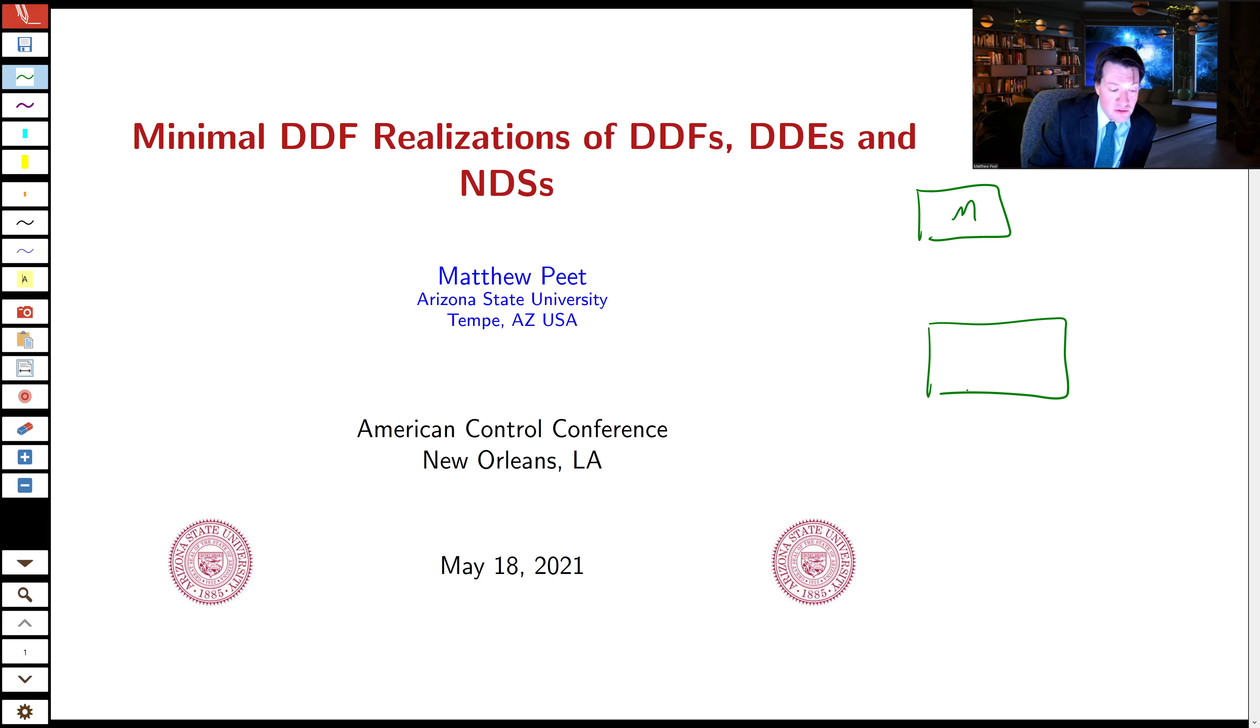by necessity, the control theorist or software developer has to be system agnostic. So it has to handle a large variety of time delay systems and therefore loses some information about the structure of the model. The question then is how to take a model and convert it to a form which has a particular structure which can be exploited by the software algorithm.